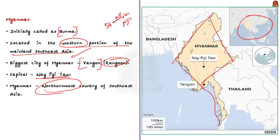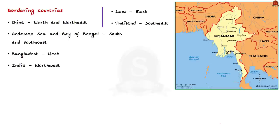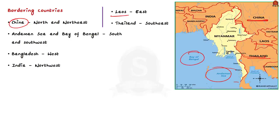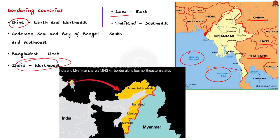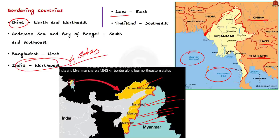Myanmar shares a border with China to the north and northeast, Laos to the east, Thailand to the southeast, Andaman Sea and Bay of Bengal to the south and southwest, Bangladesh to the west, and India to the northwest. Also know about the Indian states that border Myanmar — there are four: Arunachal Pradesh, Nagaland, Mizoram, and Manipur. Remember that the entire Myanmar can be divided into five physiographic regions: northern mountains, western range, a plateau in the east, coastal plains, and a central basin and lowlands.